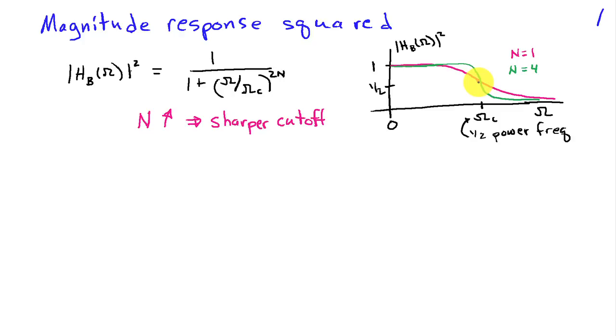As omega gets very big, this filter begins to behave as 1 over omega to the 2n, so it's going to roll off. And as n increases, this filter has a sharper cutoff, or a sharper transition from the region where the pass band would be located, where it's unit gain, down to where the stop band is located, where it approaches 0 gain.